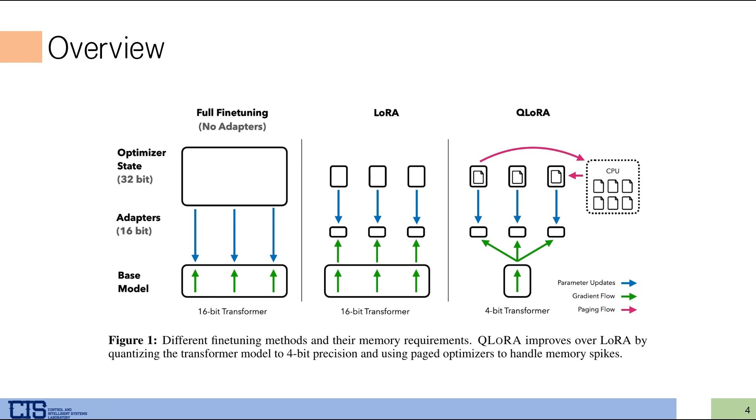The reason it can be compressed to 4-bit is due to a new data type introduced in this paper. Essentially, QLoRA uses 4-bit transformers and dequantizes to 16-bit when necessary. Additionally, QLoRA uses a paged optimizer to utilize memory more efficiently. It manages model parameters in pages, storing less frequently used parameters in CPU memory and transferring them to GPU memory only when needed.